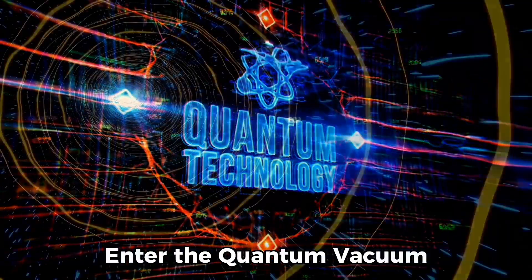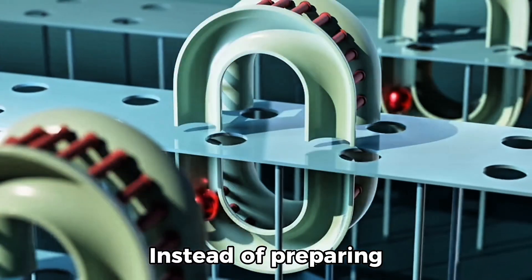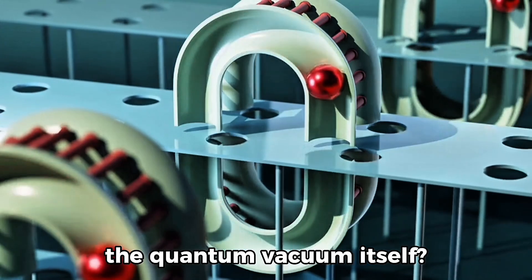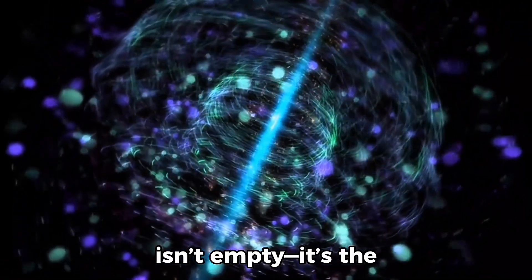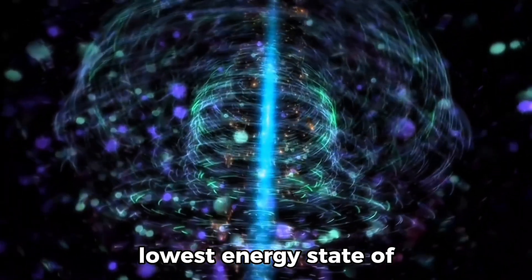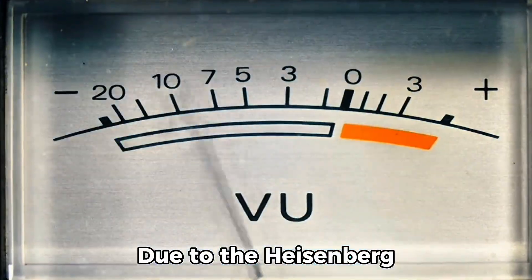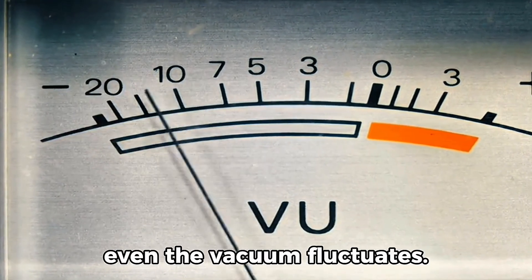Enter the quantum vacuum. Now here's where things really take a turn. Instead of preparing entangled pairs manually, what if we use the quantum vacuum itself? In quantum field theory, the vacuum isn't empty, it's the lowest energy state of the quantum fields that permeate all of space. Due to the Heisenberg uncertainty principle, even the vacuum fluctuates.